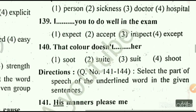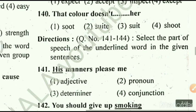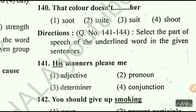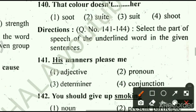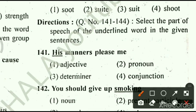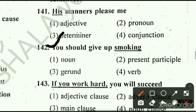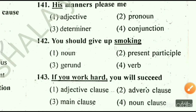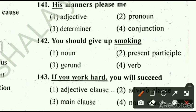From question number 141 to 144, we have to select the part of speech of the underlined word. Question number 141: his manners please me. Options are: option 1, adjective; option 2, pronoun; option 3, determiner; option 4, conjunction. 'His' is underlined here, so our right answer is option number 3, determiner. Question number 142: you should give up smoking. Options are: option 1, noun; option 2, present participle; option 3, gerund; option 4, verb. Right answer is option number 3, gerund.